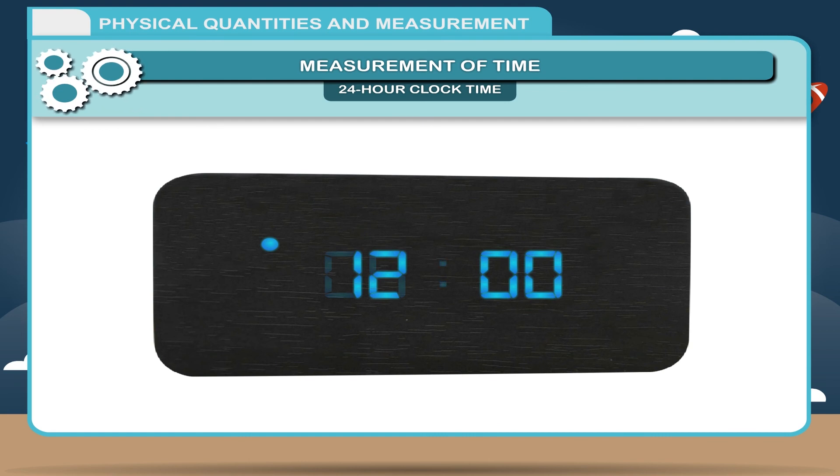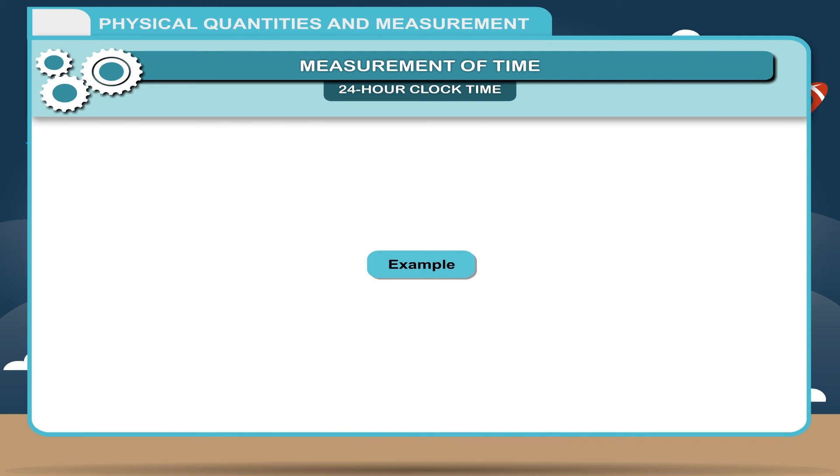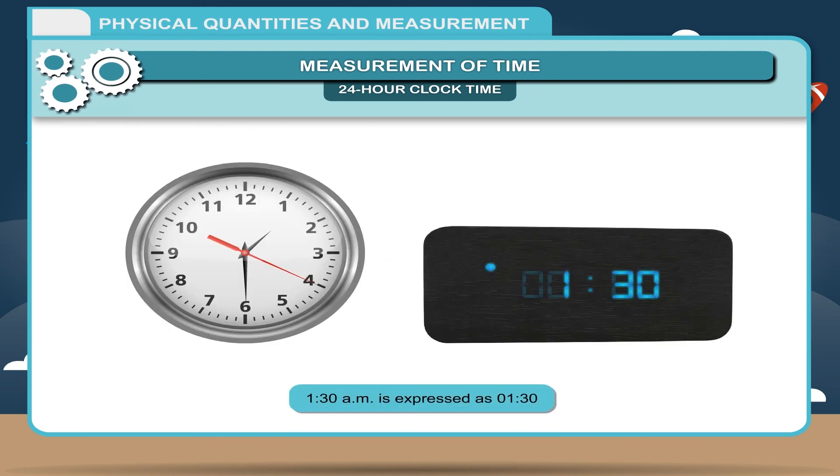For example, 1:30 AM is expressed as 1 hour 30 minutes, and 10:30 PM is expressed as 22 hours 30 minutes.